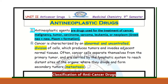Hello everyone, assalamu alaikum. Welcome to the new lecture on medicinal chemistry. In this video lecture, I am going to discuss about the anti-neoplastic or anti-cancer drugs. Anti-neoplastic agents are basically those pharmaceutical agents or drugs that are useful in the treatment of different types of cancer and cancerous cells, like melanoma, tumors, carcinoma, sarcoma, leukemia, and neoplasm.